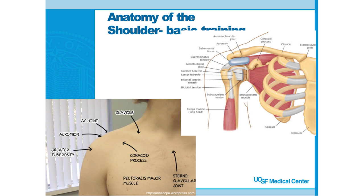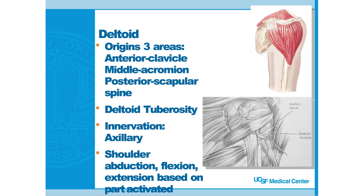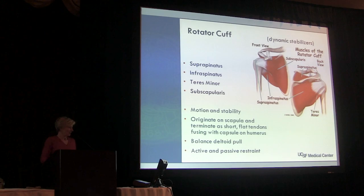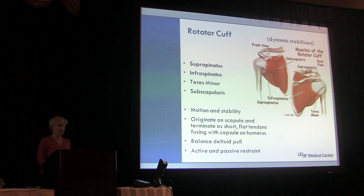Those are good landmarks in terms of physical exam, which Dr. Feely is going to get into later. The deltoid has three origins, which impacts its ability to do different tasks. The front part attaches to your clavicle, the middle part attaches to your acromion, and the posterior part attaches to the scapular spine. Depending on which part is activated, you can abduct your shoulder, pull your arm forward, or pull it back.